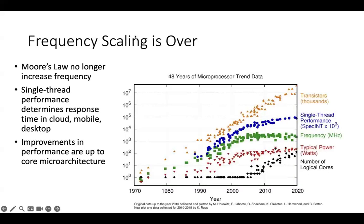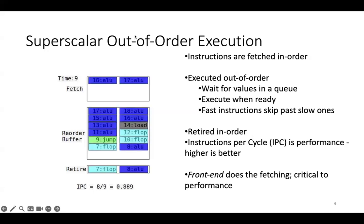Frequency scaling is over — we can no longer get the gains we had in the past by exploiting Moore's Law. Moore's Law continues to give us more transistors, but no more power advantages. We have to be very intelligent about how we use the extra real estate, and it's not even clear Moore's Law will continue. Single-thread performance determines response time in cloud, mobile, desktop, and other applications, and improvements are now up to core microarchitects.